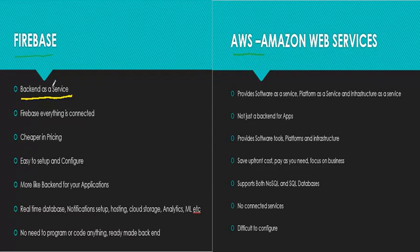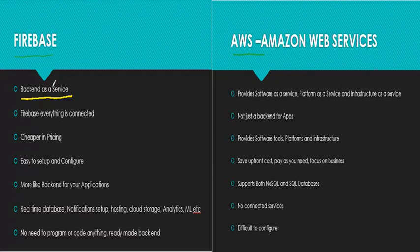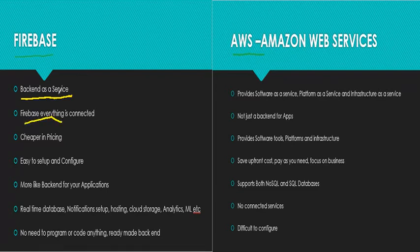One major difference is that Firebase is basically just a backend-as-a-service. It means that you have a web or mobile application with a front-end, and you want a backend with basic things like a database, hosting services, Google Analytics, machine learning, or authentication services, file storage, etc. All those things are connected together in Firebase and you can simply use it as a backend to your mobile or web app.